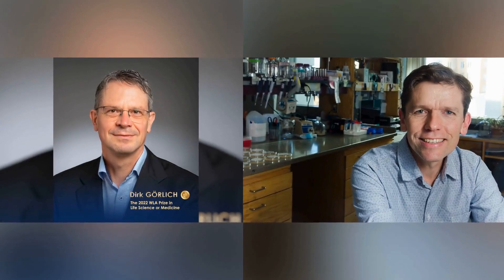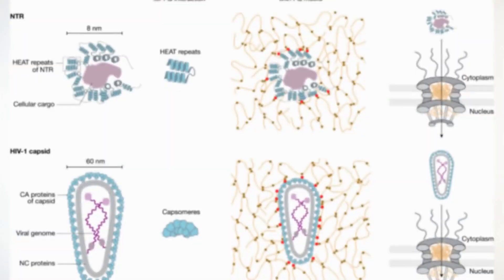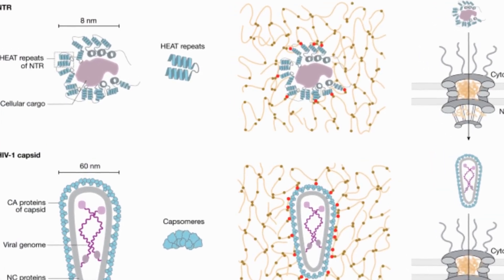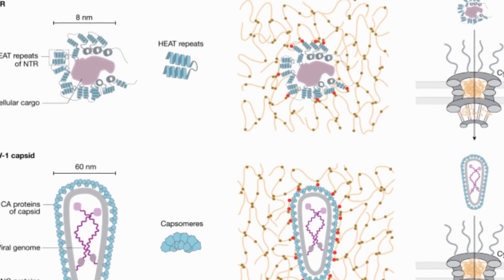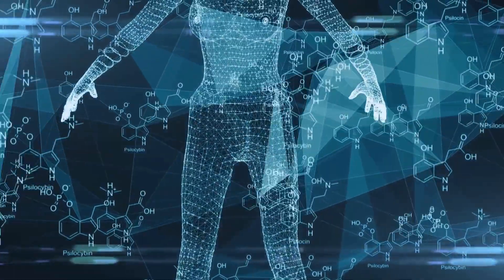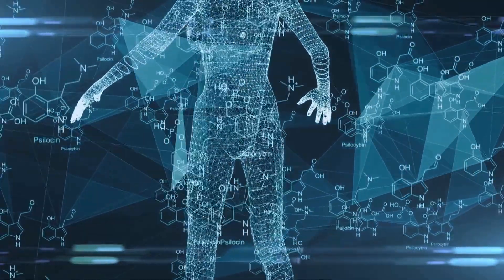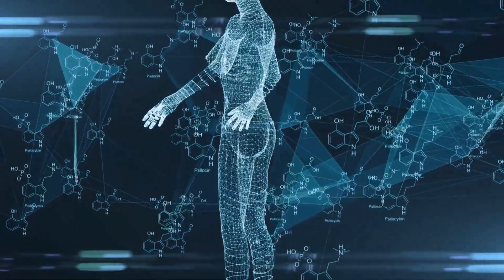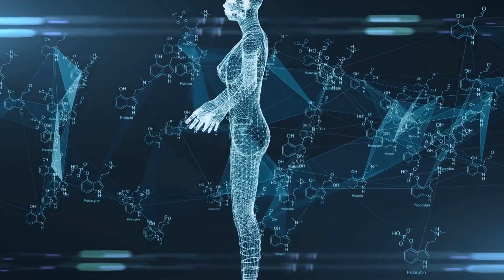Max Planck director Dirk Görlich and MIT's Thomas Schwartz highlight the capsid's evolution, featuring a hydrophilic surface that allows it to pass through the FG phase. This sophisticated molecular adaptation offers a glimpse into potential strategies for achieving the ambitious goal of an HIV cure by 2030.